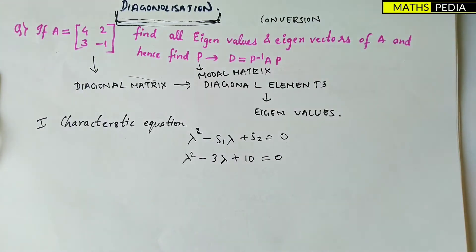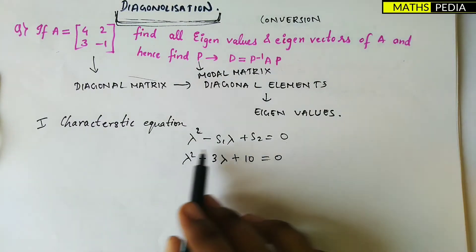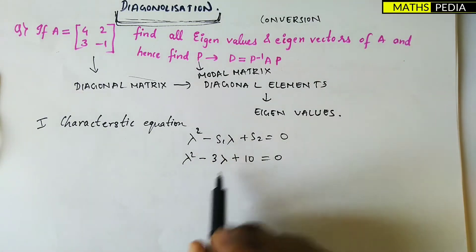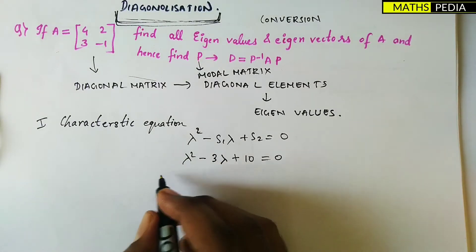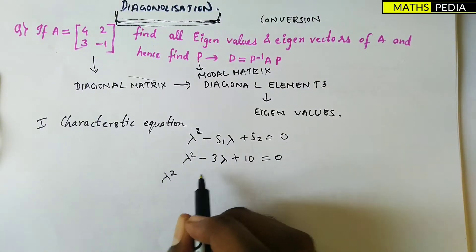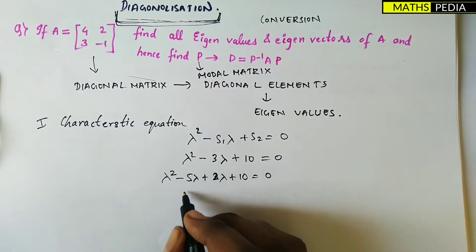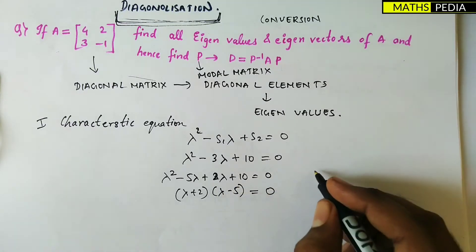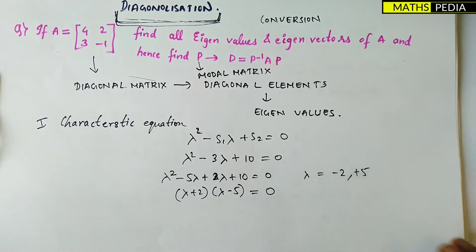After getting the characteristic equation, we solve it. So λ² − 3λ + 10 ... splitting the middle term: λ² − 5λ + 2λ + 10 = 0, giving (λ + 2)(λ − 5) = 0. From this we get the two eigenvalues: λ = −2 and λ = 5.